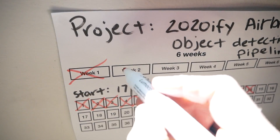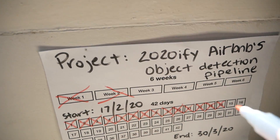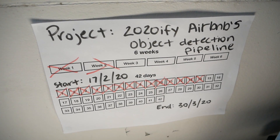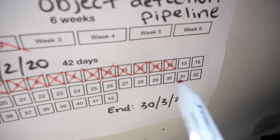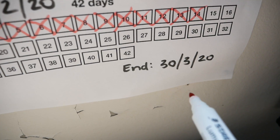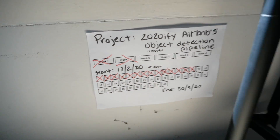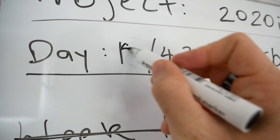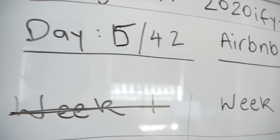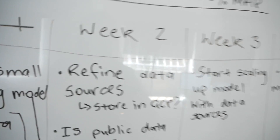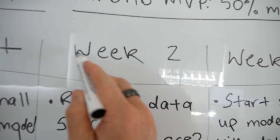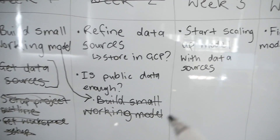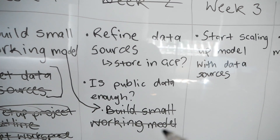We can tick off week two of the 2050 IIM Airbnb Object Detection Pipeline. We are up to day 15 and there's a bug checking it out. Week three! How exciting! We've got a small model working from last week, which is really amazing.